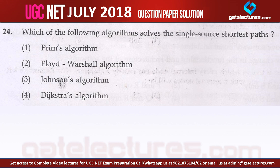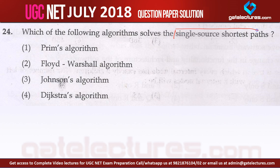Now let us look at question number 24. This question is from the subject Algorithms and it's a very straightforward question. You just need to know what Prim's algorithm does, what Floyd-Warshall algorithm does, what Johnson's algorithm does, and what Dijkstra's algorithm does. They're asking which of the following algorithms solves the single source shortest path problem.